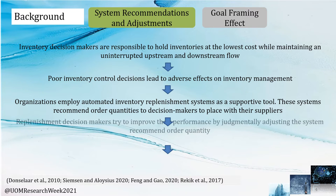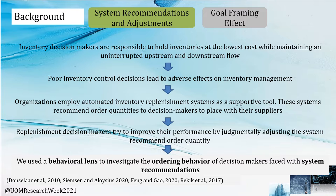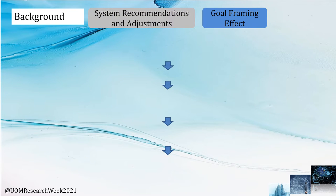These systems recommend order quantities to decision makers to place with their suppliers. However, when the demand forecast does not reflect the demand realization, or if the decision makers do not trust the system, they try to improve their performance by judgmentally adjusting the system-recommended order quantities. Therefore, we use a behavioral lens to investigate the ordering behavior of decision makers faced with the goal framing effect.